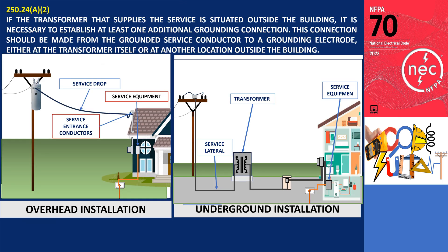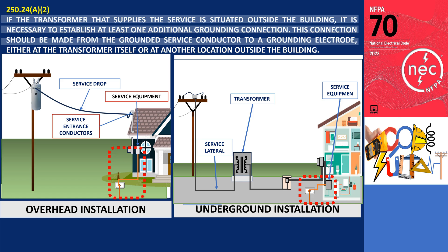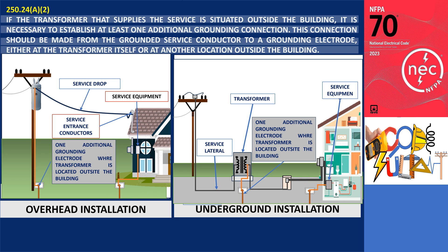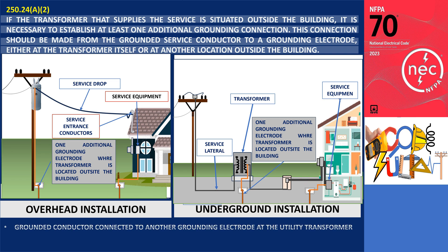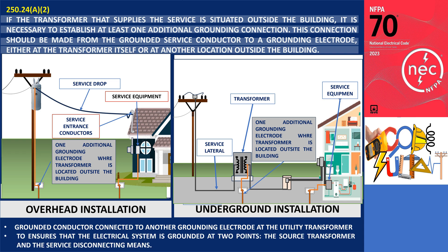In addition to the grounding connection for the grounded system conductor at the point of service entrance, according to 250.24(a)(2), if the transformer supplying the service is situated outside the building, it is necessary to establish at least one additional grounding connection. This connection should be made from the grounded service conductor to a grounding electrode, either at the transformer itself or at another location outside the building. This means a grounded service to a building must have the grounded conductor connected to a grounding electrode at the utility transformer, ensuring the electrical system is grounded at two points: the source transformer and the service disconnecting means. Service utilities typically adhere to NEC rules and ground their electrical systems, though they do so for a different reason — compliance with the National Electrical Safety Code.